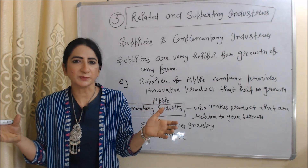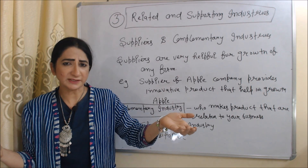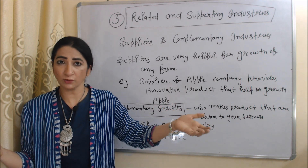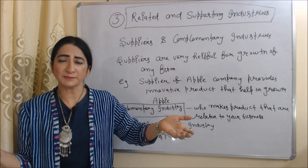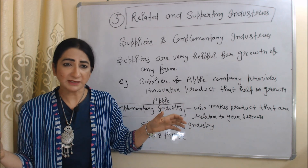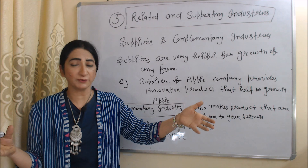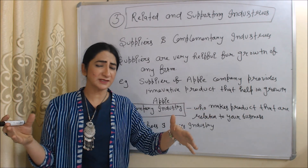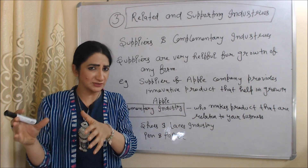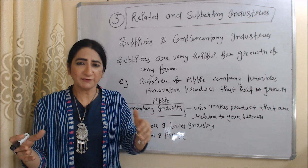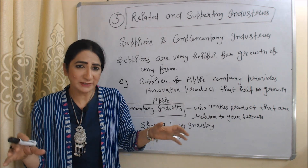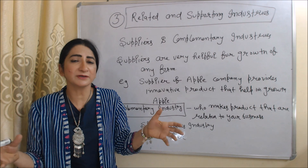Next is related and supporting industries. These include supplier and complementary industries. Suppliers are very helpful for the growth of any business — for example, suppliers of Apple provide very innovative products that help in the growth of Apple company. Similarly, complementary industries are also very helpful. These are industries that make products related to your business, for example shoes and laces, or pen and paper. If demand for shoes increases, then obviously demand for laces will also increase. So suppliers and complementary industries help in the growth of any business.